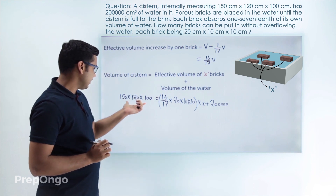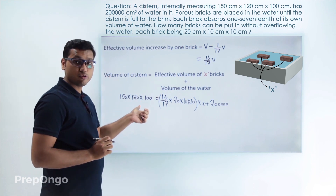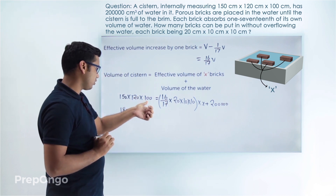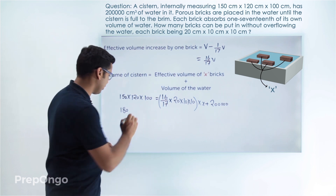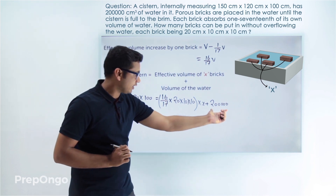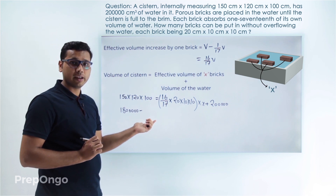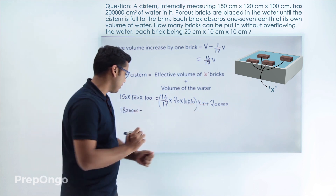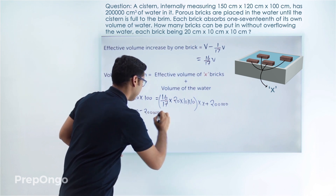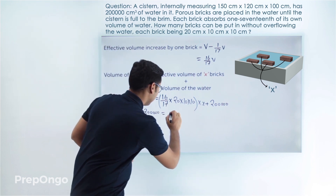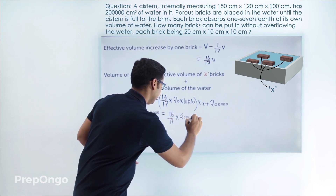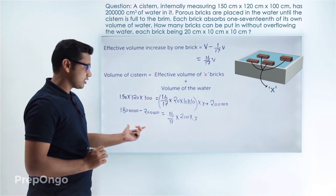Multiplying these terms: 15 × 12 will be 180 and there are four zeros, giving 1,800,000. We take the water volume term to the left-hand side, so it comes in subtraction. This gives us 1,600,000 equals 16/17 into 2000 into x. Solving this equation gives us the value of x.